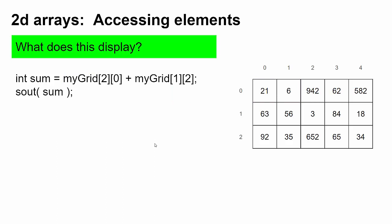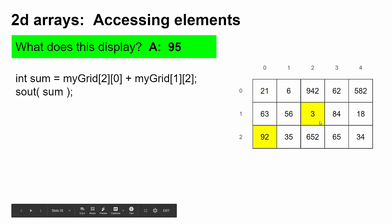You try it now. What about this one? What do you think that's going to display? Row two, column zero is 92. Row one, column two is three. You add them together and you get 95.